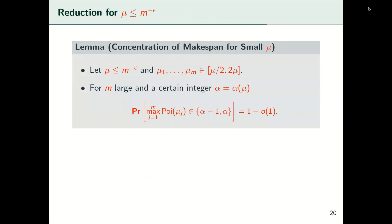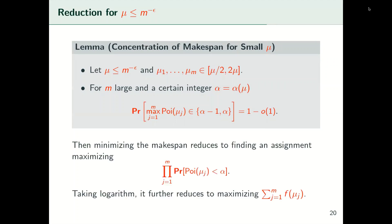First we consider the reduction for the first regime. Our reduction is motivated by a concentration lemma: in this regime, there exists an integer alpha such that the makespan is between alpha-1 and alpha with high probability. Moreover, this integer alpha only depends on the average load mu, which is independent of any specific assignment. Therefore, we pre-compute alpha and reduce the problem of minimizing the makespan to finding an assignment that maximizes the probability of the makespan being smaller than alpha — equivalently, maximizing the product of the probabilities of each load being smaller than alpha. Taking the logarithm, this reduces to maximizing a sum of some function f of the loads, which can be solved by the ILP scheme efficiently.